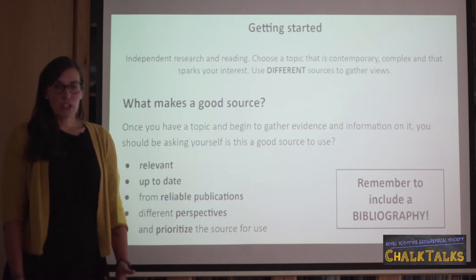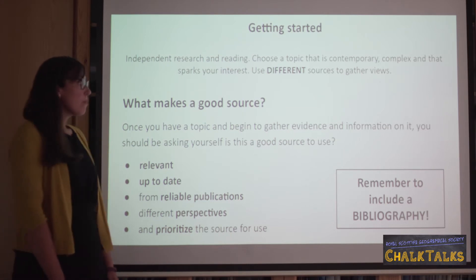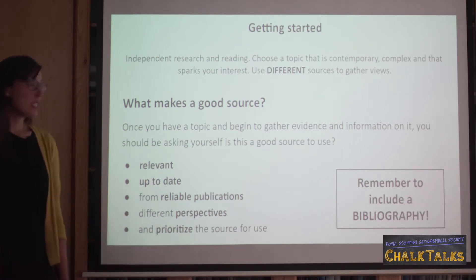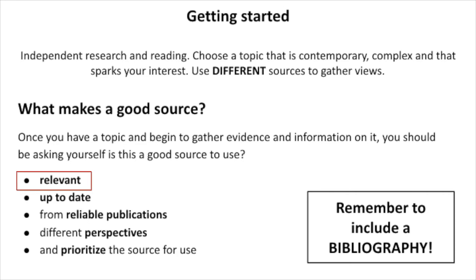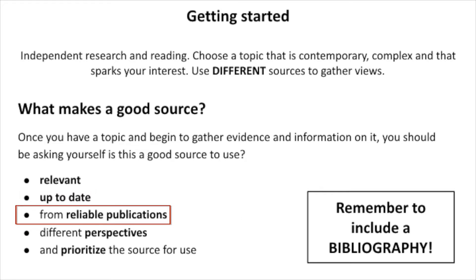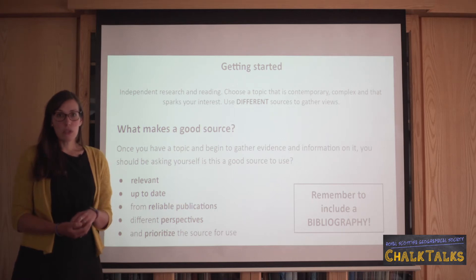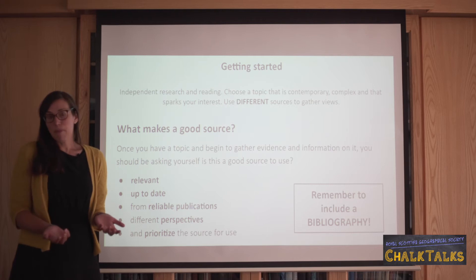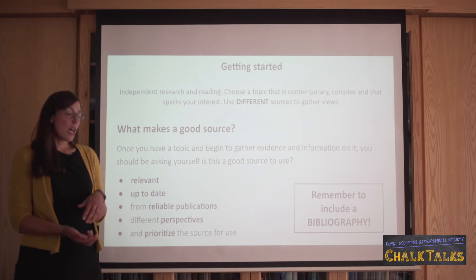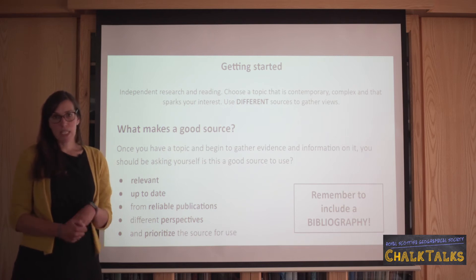Once you have found a topic, you then need to look for different viewpoints by looking at different sources. What makes a good source is outlined on the slide. For example, you want something that is relevant to that topic, up-to-date — within three years is a good benchmark — and from a reliable publication, meaning something that is peer-reviewed, well-respected, and known. This does not have to be scientific journal papers; reliable newspapers or news sources are also acceptable. And if your topic is a local topic, for example the impact of a housing development in your local town, a local publication or local newspaper would be equally valid.